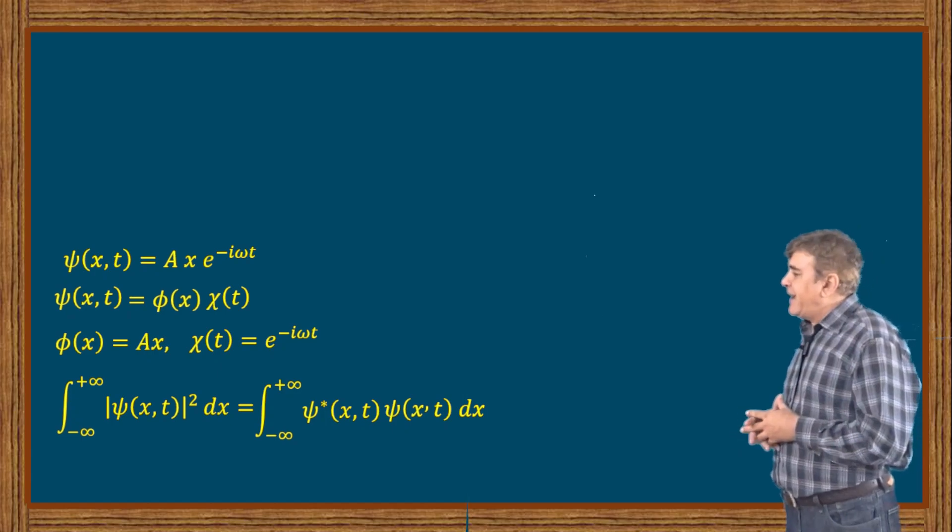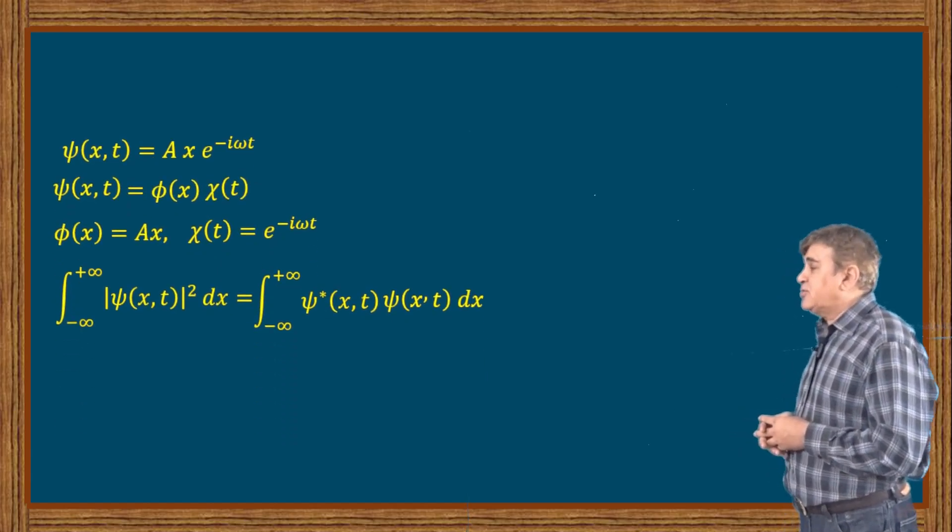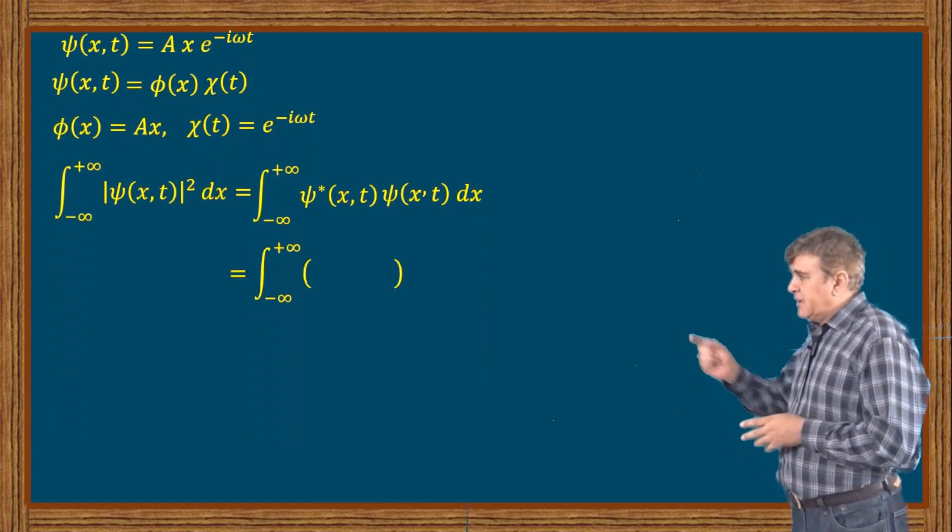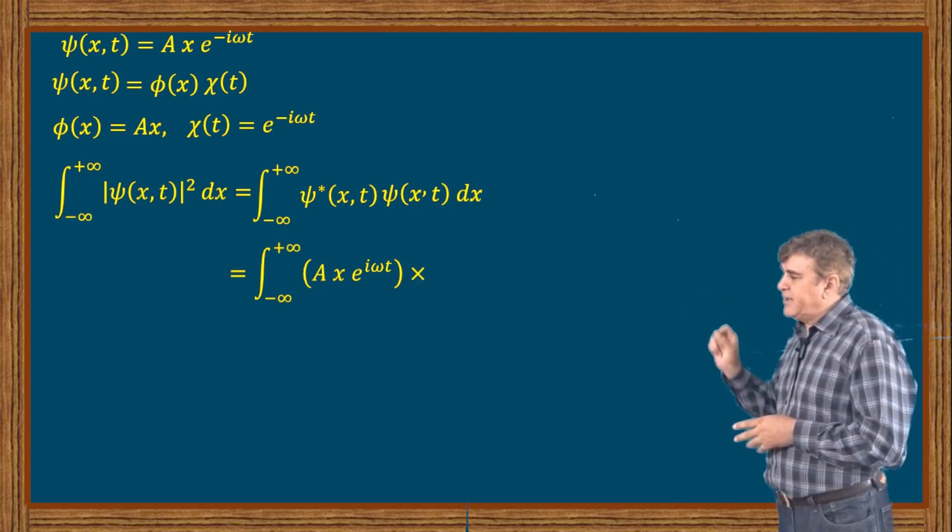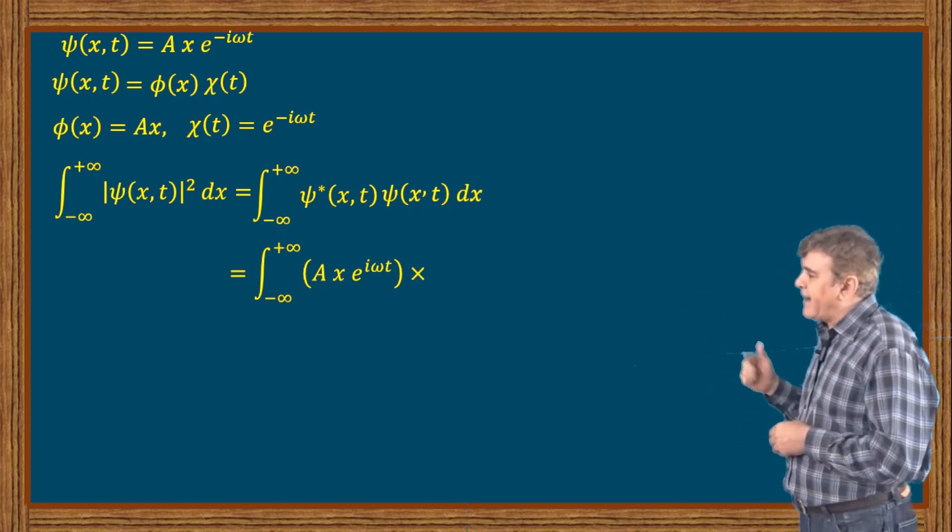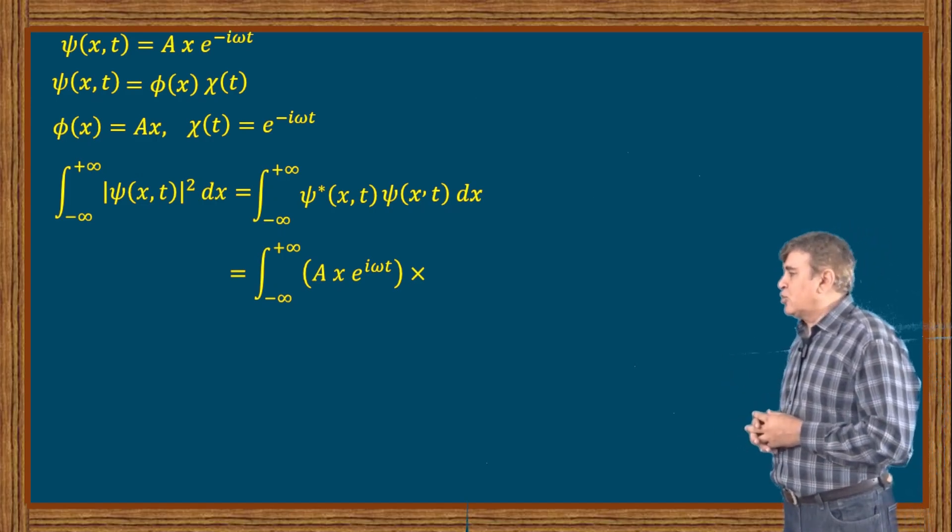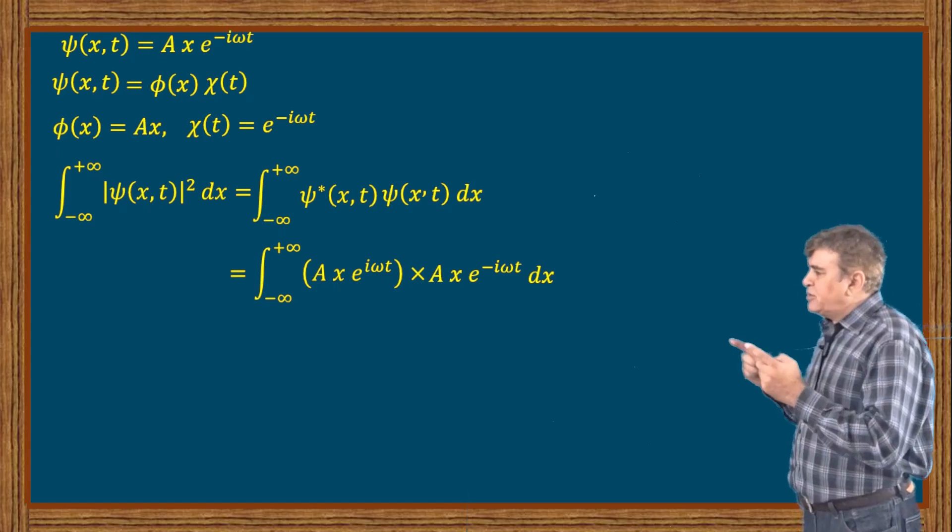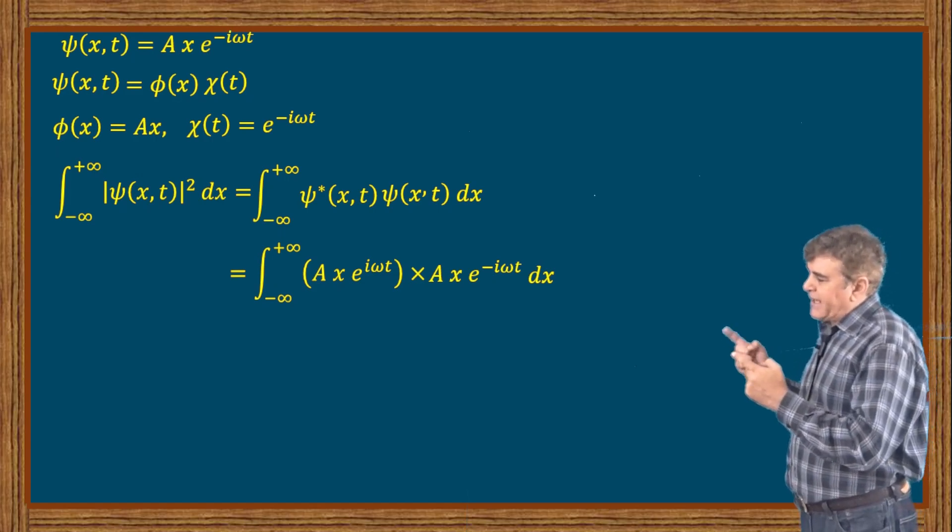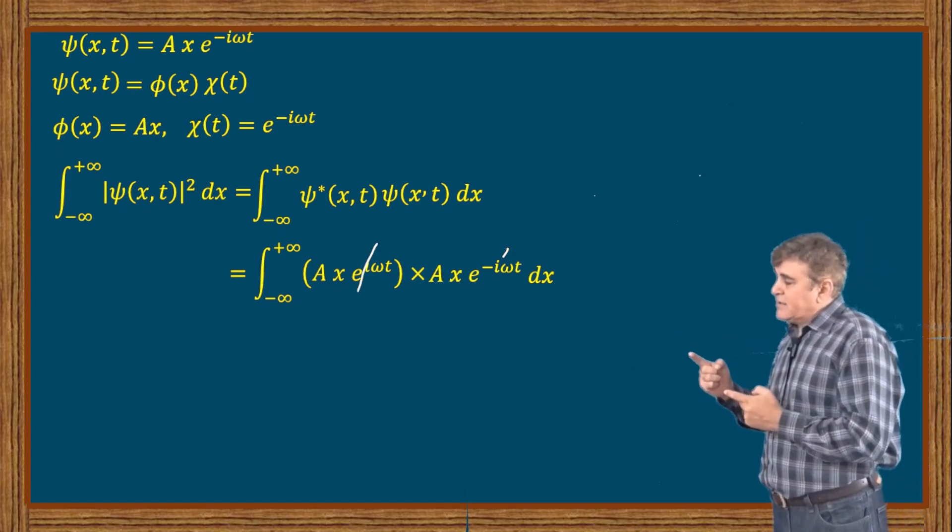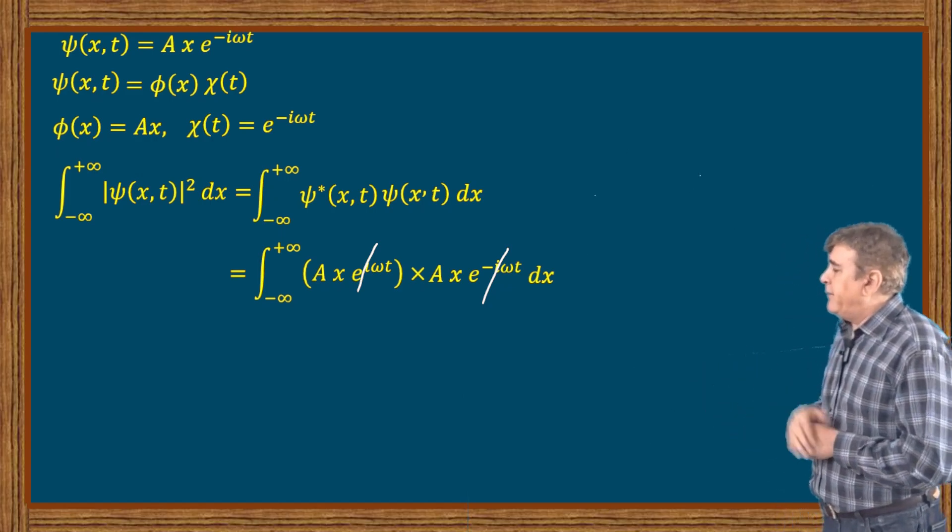I can further write it as A times x times e^(+iωt)—keep in mind I'm changing the sign of ω because I'm taking the conjugate of the wave function—times A times x times e^(-iωt). The two exponents in the two brackets cancel with each other and I'm left with A² x² dx.